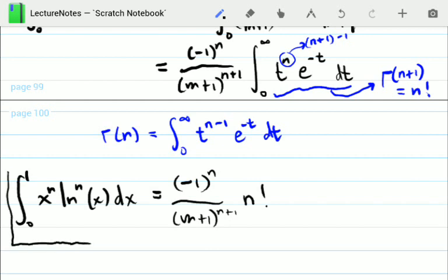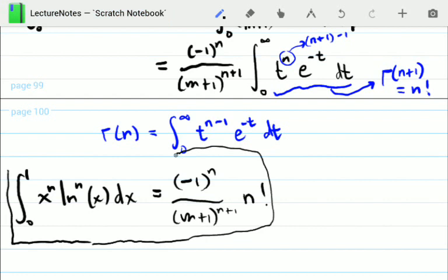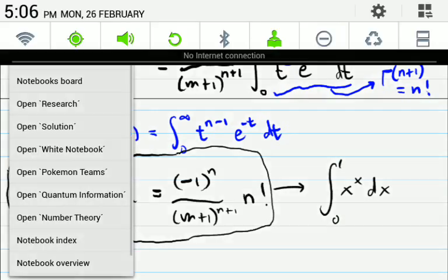So now, we will have this very powerful identity, the definite integral for x to the n, ln to the n of x dx, and we will be using this to solve the integral, the very interesting definite integral, x to the x dx from 0 to 1. So I'm gonna do that in the next video.